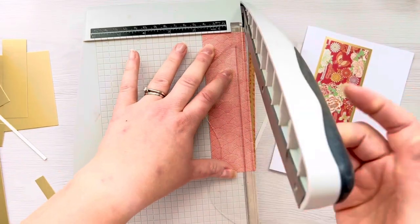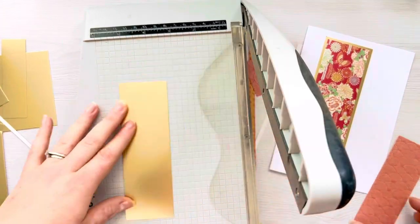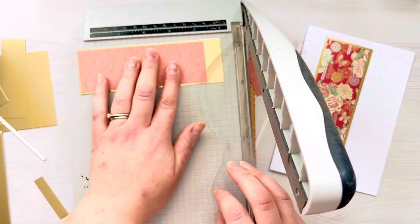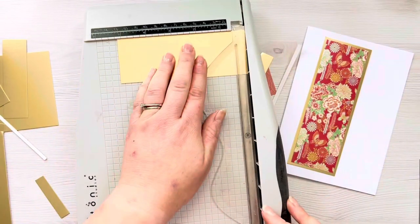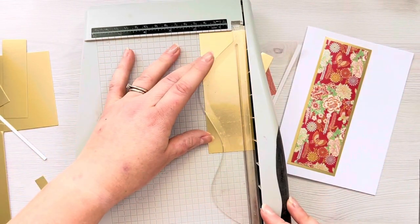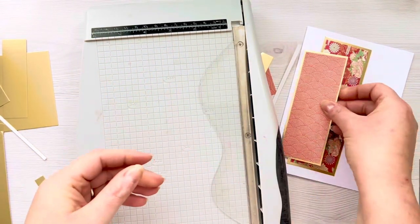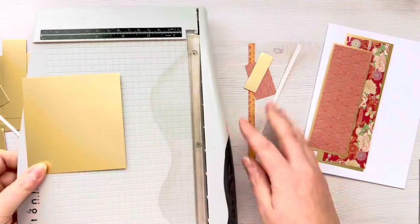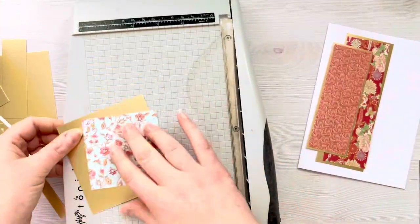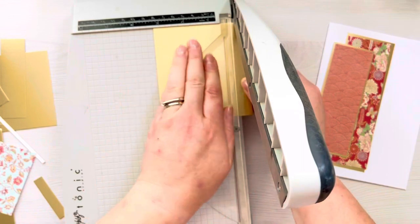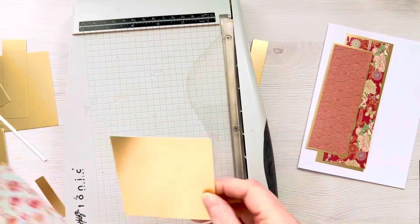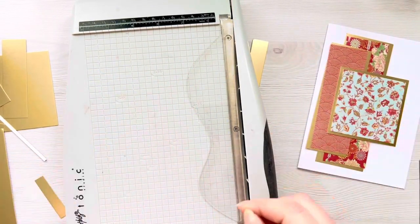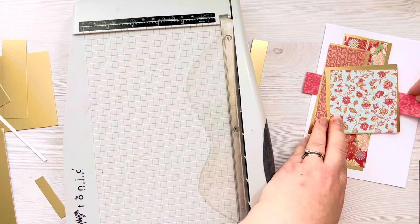The first piece of patterned paper measures 2x6 and the gold piece is 2.25x6. For the second piece of patterned paper, I've trimmed that down to 1.75x5 and the gold piece is 1.75x5.25. I'm really using these measurements just to fit the scraps that I've got, so you could customize this to whatever size scraps you have. I've got a square piece that's 3 inches squared and a piece of gold that's 3.25 squared.